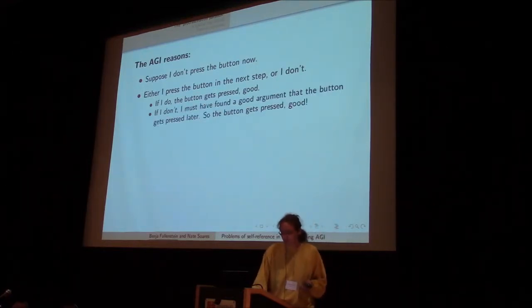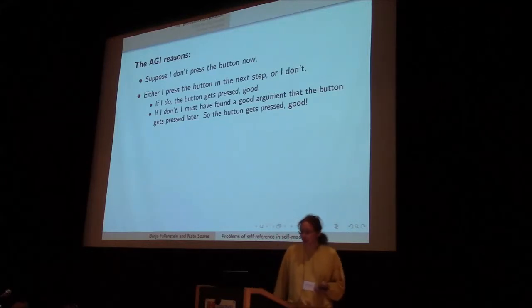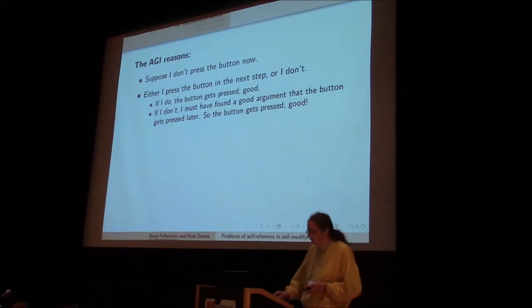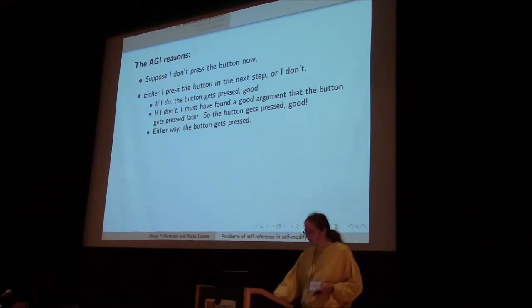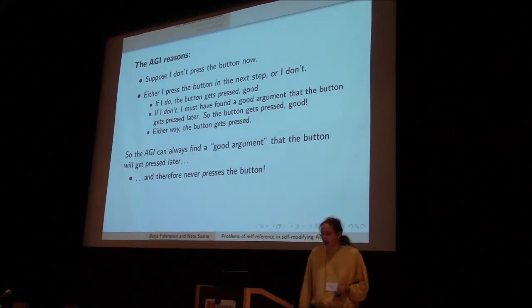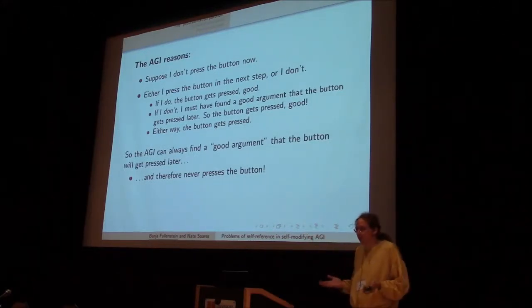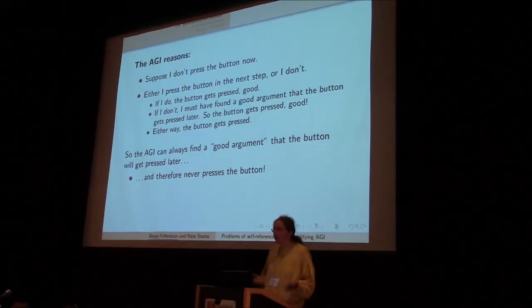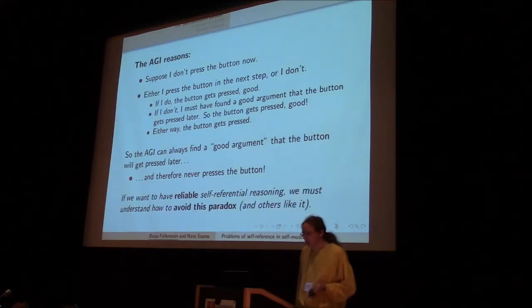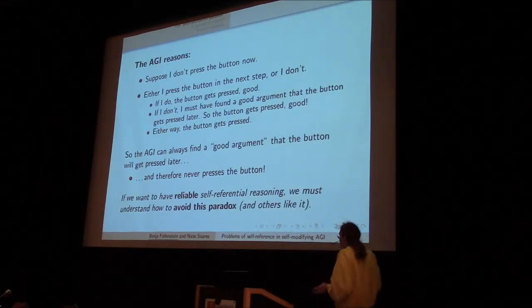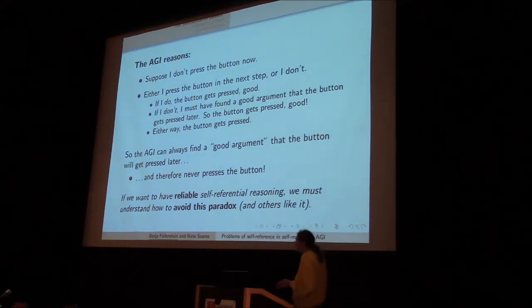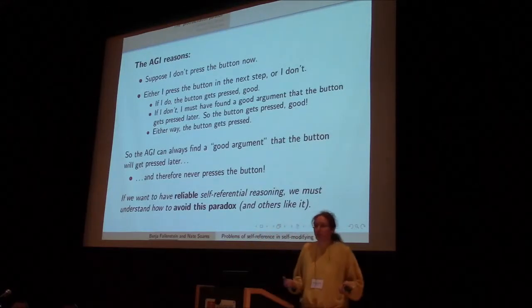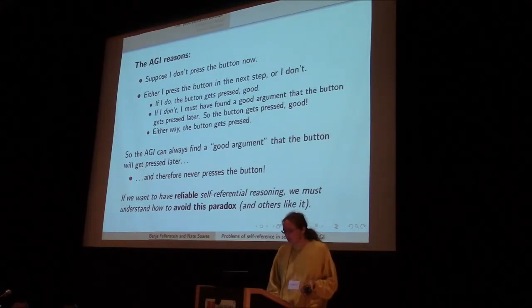So suppose that the AGI reasons like this. If I don't press the button right now, then in the next step I'm either going to press the button or not. If I do, the button gets pressed. Good. I've avoided not getting any points. If I don't press the button in the next point, I certainly must have found a good argument that the button gets pressed at some later time. So the button gets pressed. Good. Either way, the button gets pressed.